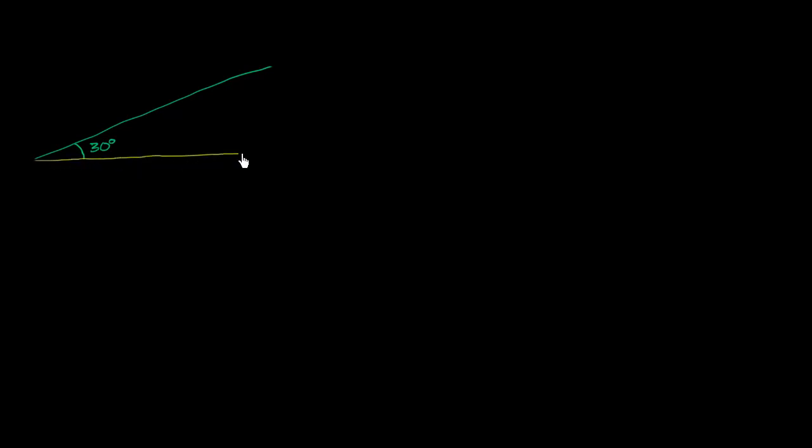What we're going to do is launch a projectile on an incline — so maybe we're on the side of a hill. Let's say we're on the side of a hill like this, and we know the inclination of the hill is 30 degrees off the horizontal. We are going to launch a projectile at 10 meters per second, and the angle with the hill is 15 degrees.